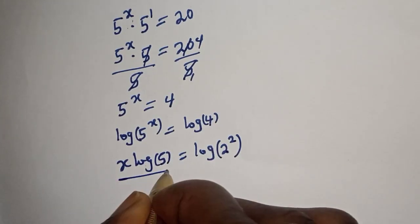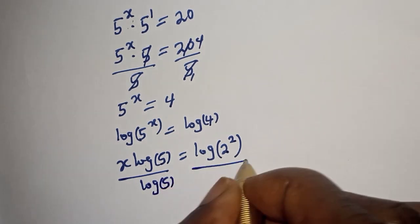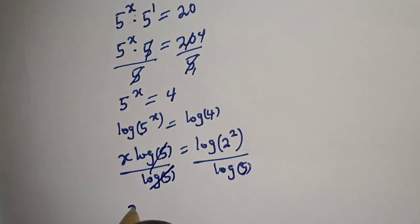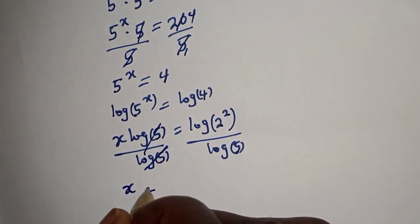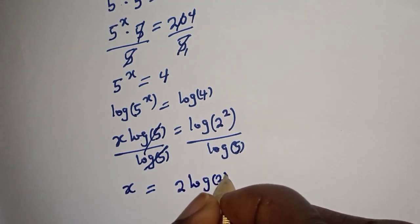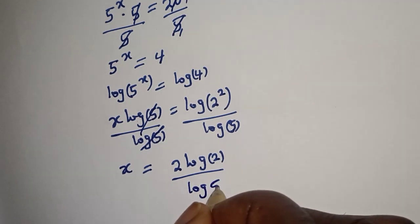x divided by log 5, divided by log 5. This will cancel this. x is equal to 2 log 2 over log 5.